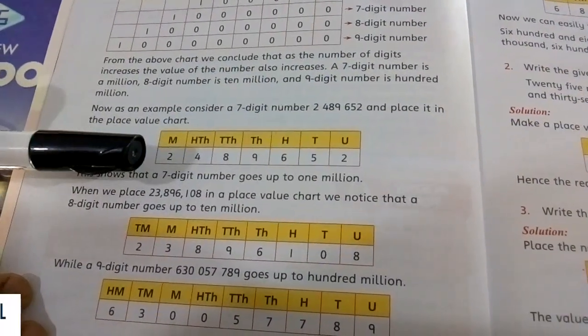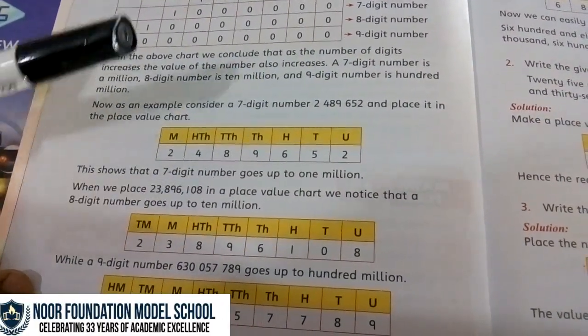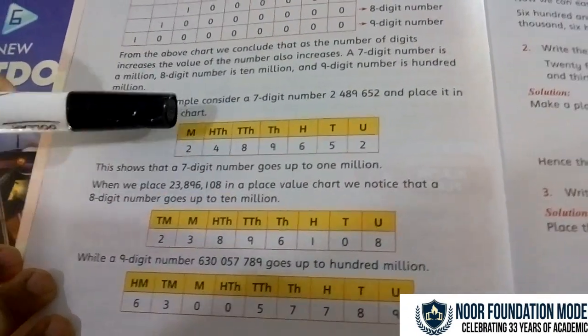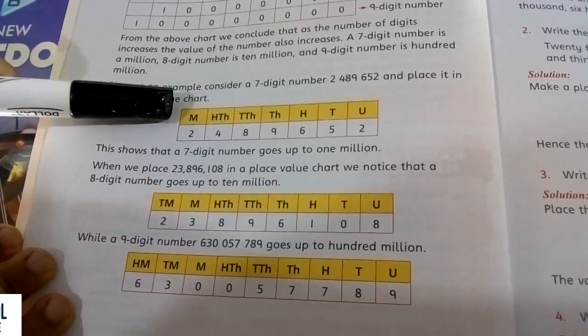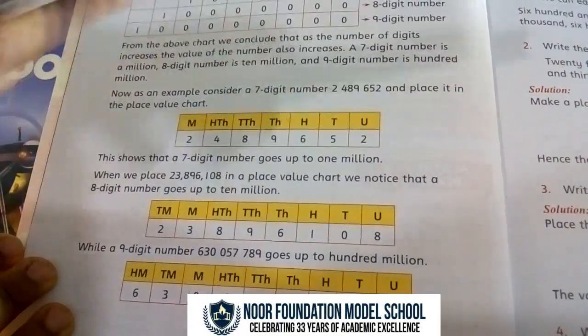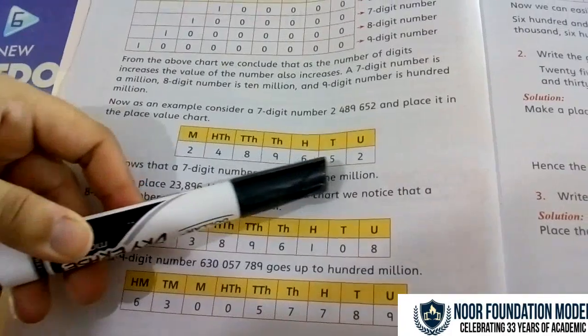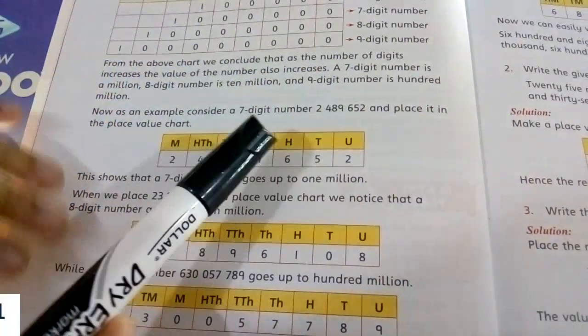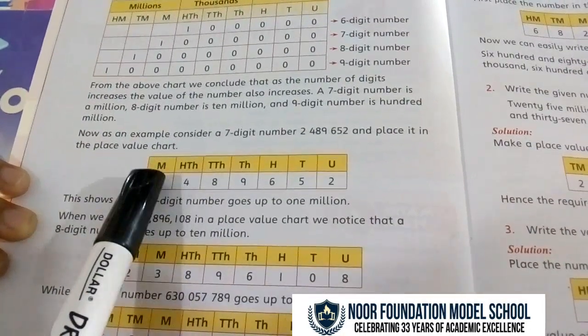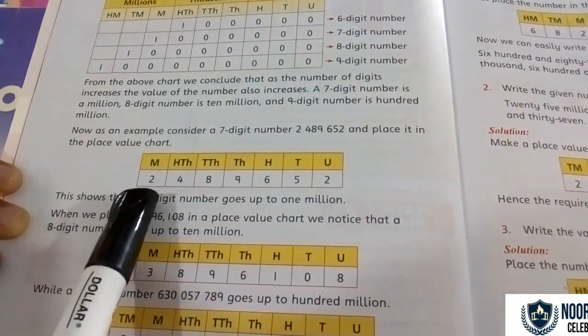Now you have to create a place value chart by heart for this type of given number, and then you have to say that number. For example, you have to create a number in digits and place value: unit, ten, hundred, thousand, ten thousand, hundred thousand, and million.